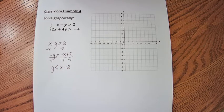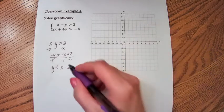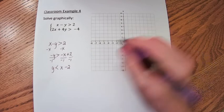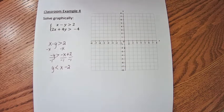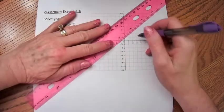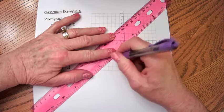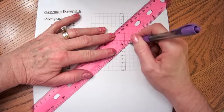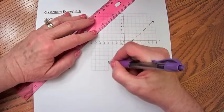y is less than x minus 2. So this purple line is going to have a y-intercept of negative 2 and a slope of 1, up 1 over 1. And since there's no equal sign, this is going to be a dashed line. We're going to graph the inequality here.